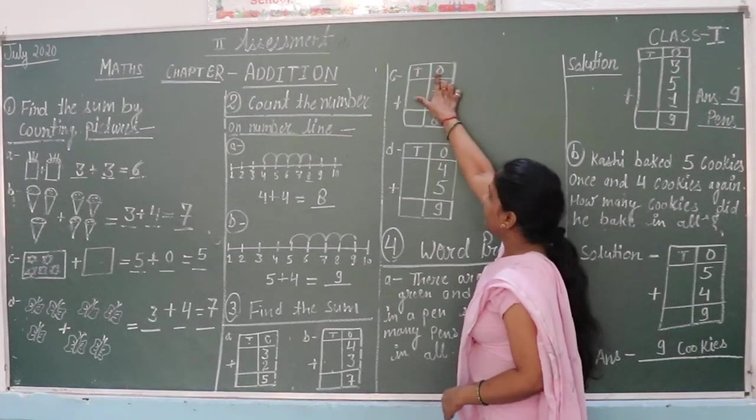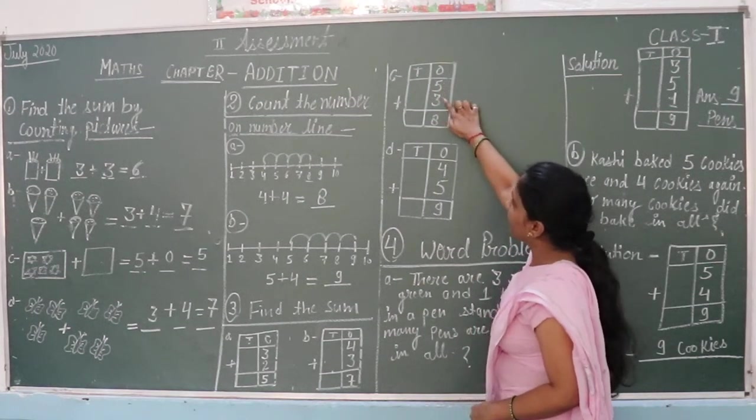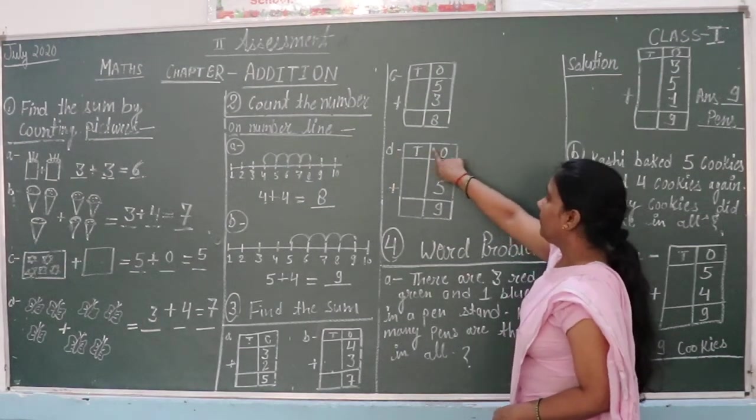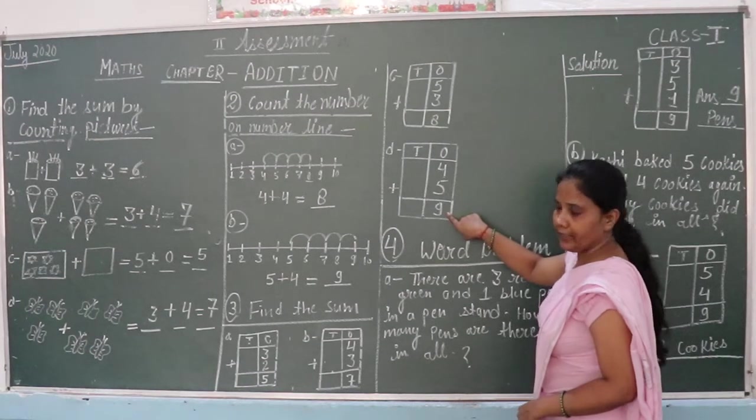C part. 10s, 1s. 5 plus 3 is equal to 8. 4 plus 5 is equal to 9.